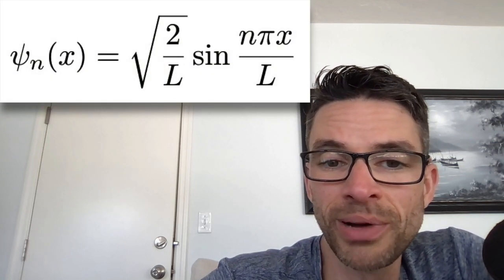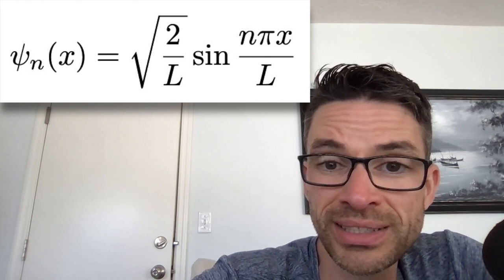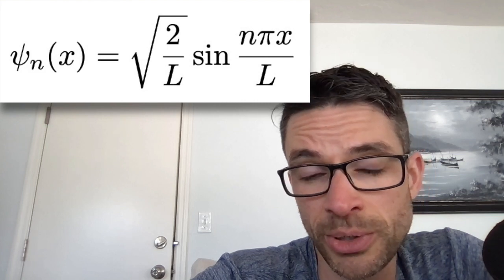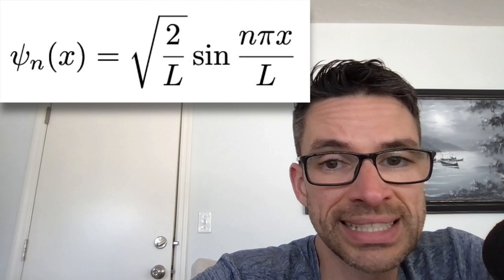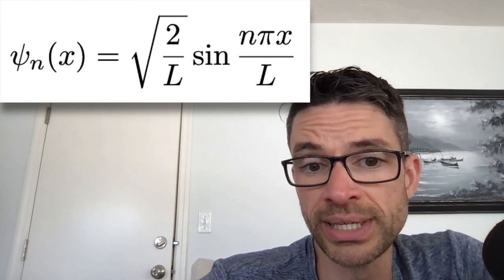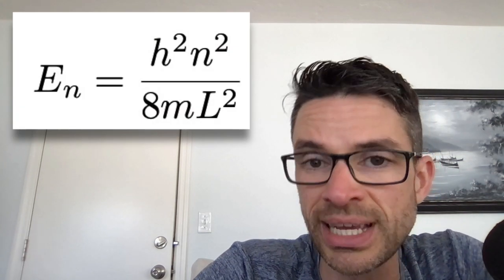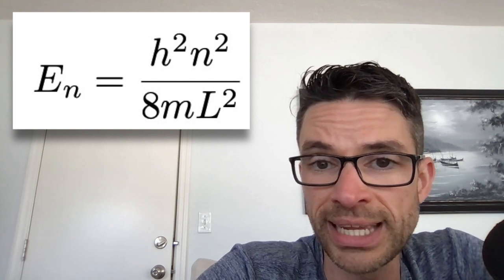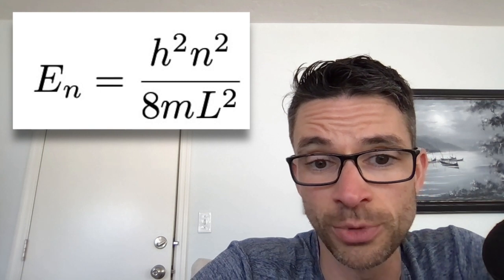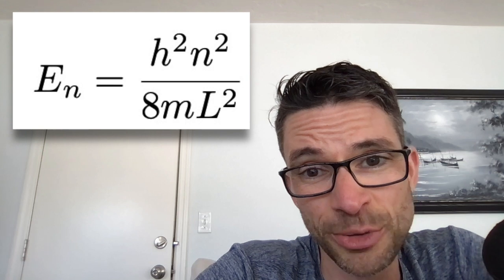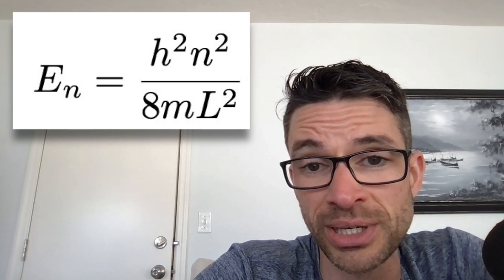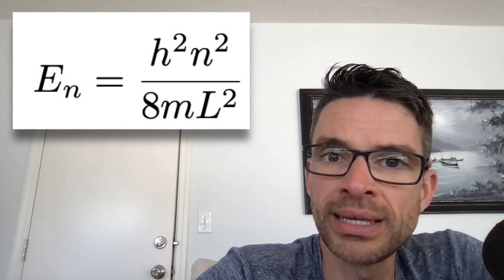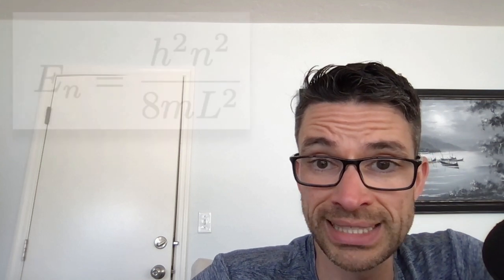Wave functions for the particle in a box generally have the form: the square root of (2/L) times sine of (nπx/L), where L is the length of the box and n is the principal quantum number, which also corresponds to the number of loops in the function. Pi is π and x is the position along the x-axis. The energies inside the box correspond to the equation E_n = h²n² / (8mL²), where h is Planck's constant (6.626 × 10⁻³⁴ joules per hertz, or joule-seconds), and m is the mass of the particle — in this case, the mass of the electron.